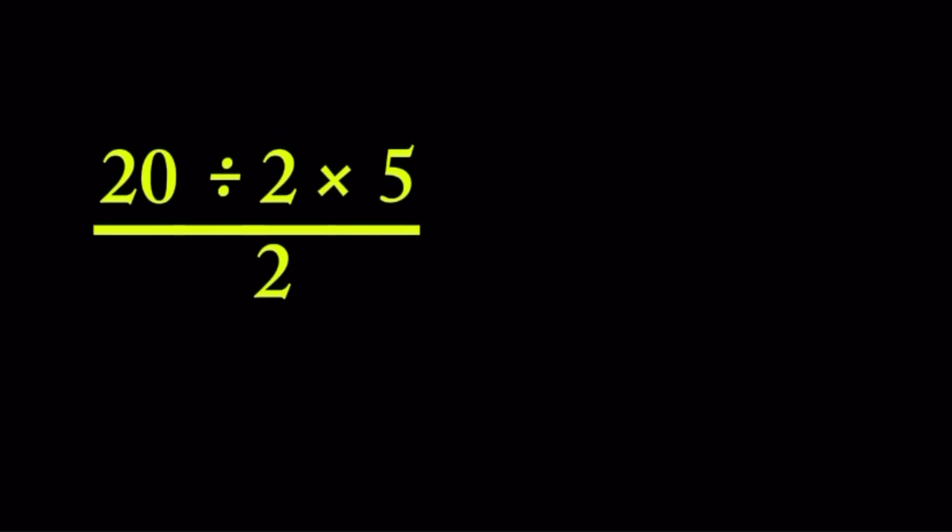Some years ago, a student solved this question: 20 ÷ 2 × 5 ÷ 2. He solved this by saying 2 × 5 = 10 divided by 2. He got 20 ÷ 10 = 2, then 2 ÷ 2, and concluded his final answer is 1.